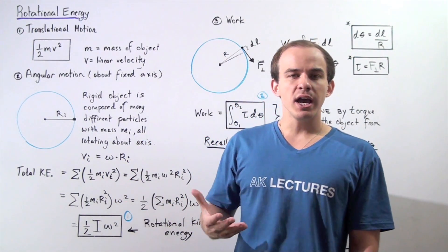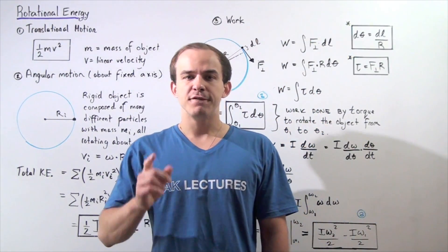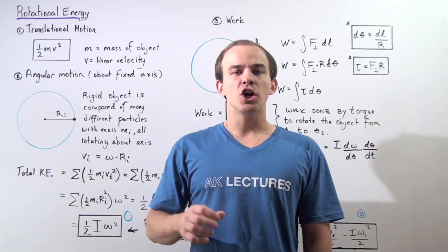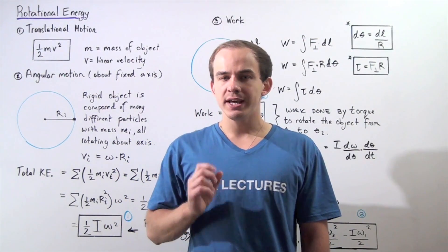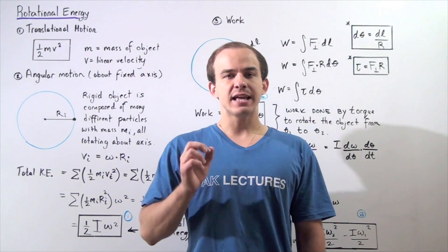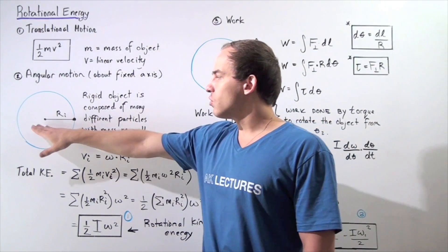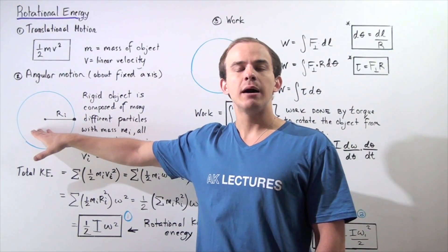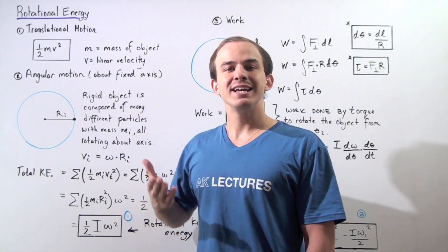In the same analogous way, we can also determine a formula for the kinetic energy of an object undergoing angular motion about a fixed axis. Let's suppose we have the following two-dimensional rigid object — a rigid disk.